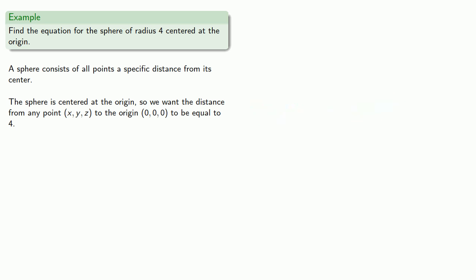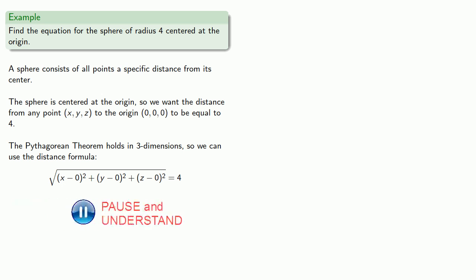Now, the Pythagorean theorem holds in three dimensions. So, we could use the distance formula. The distance between the two points is the square root of the sum of the squares of the differences. And we want that equal to 4. And we can simplify this. And we have a square root. And we can square both sides to eliminate the square root to get a nicer looking equation.